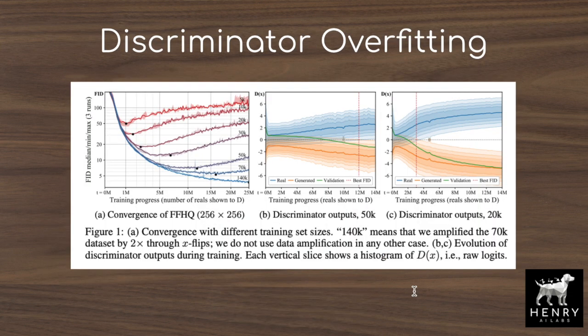Similar to any classifier with a lot of parameters and not enough data, our discriminator is going to overfit to the small set of available training data. In the generative adversarial network framework, we have the generator that learns to produce data and the discriminator classifier that predicts whether the data came from the generator or the original training set. These charts show examples of discriminator overfitting — the discriminator overfits to the small set of real training data so much that it classifies the generated samples in the same way as a held-out real data validation set.